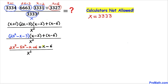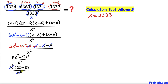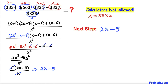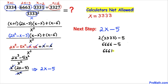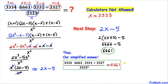Now let's simplify the numerator. We can see negative x and positive x cancel out. Positive 6 and negative 6 cancel as well. We can factor out x squared between the remaining two terms, and then this x squared and x squared cancel. So we simply end up with 2x minus 5. Now let's replace x with 3333 — after substitution and simplification, our answer turns out to be 6,661.